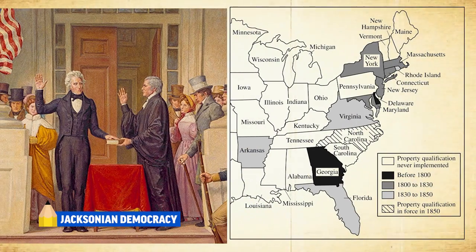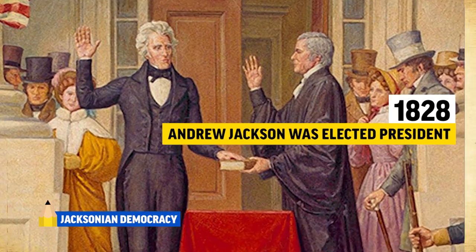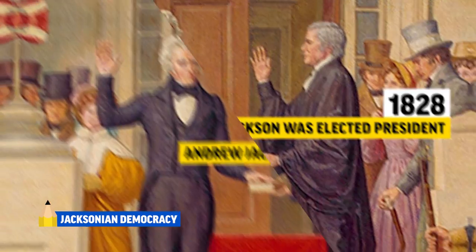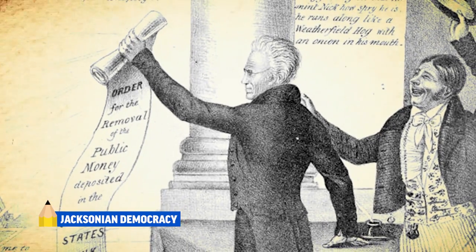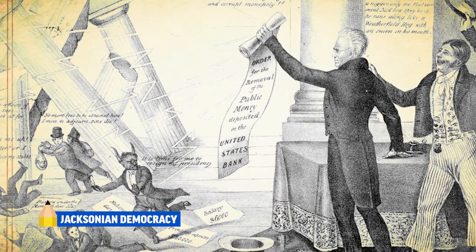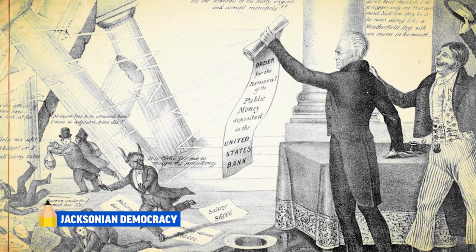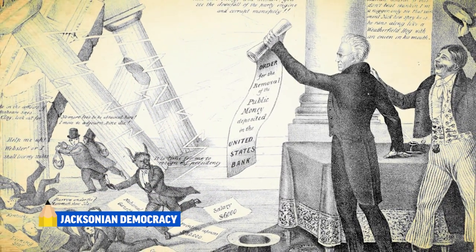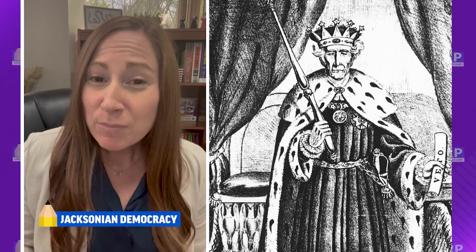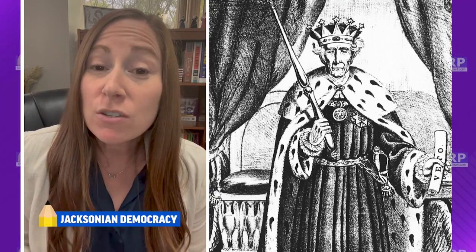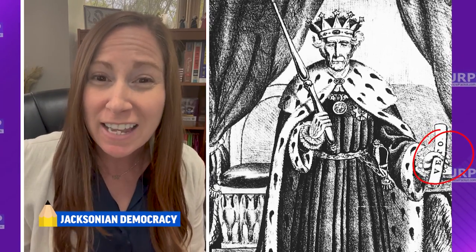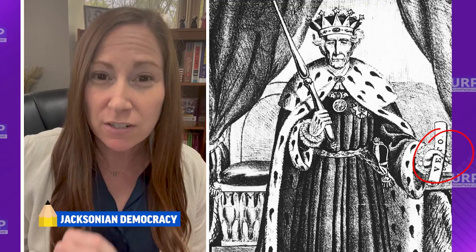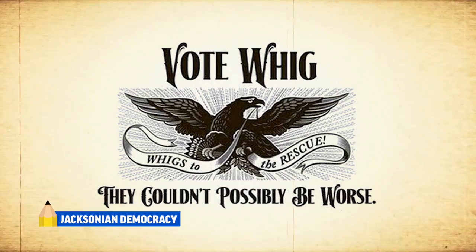This coincided with the expansion of white male suffrage, which resulted in Jacksonian Democrats electing him in 1828 as the common man president. Jackson's administration was dominated by controversy, including the nullification crisis surrounding the Tariff of Abominations, the National Bank, and the Indian Removal Act. His political opponents accused Jackson of being a tyrant as he ignored Supreme Court decisions and excessively vetoed bills. Their hatred of Jackson led to the formation of the Whig Party.